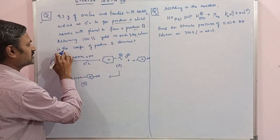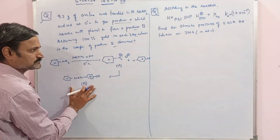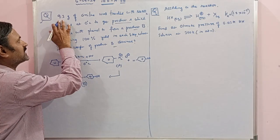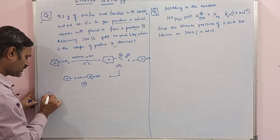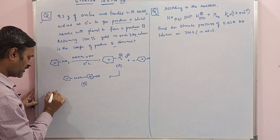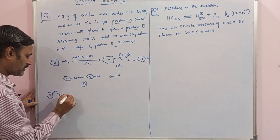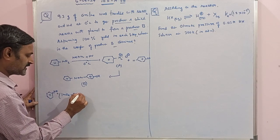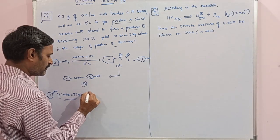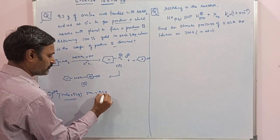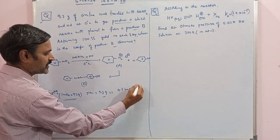So this is the setup. Assuming 100% yield in each step, what is the weight of product B obtained? We have to find the weight of this dye taking 9.3 grams of aniline. First, what is the molar mass of aniline? The molar mass of aniline is 93 grams per mole. So if 93 grams is one mole, then 9.3 grams is 0.1 mole of aniline given in the experiment.